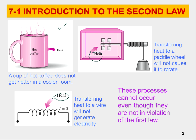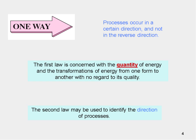These processes cannot occur, but they are not in violation of the first law — the law of conservation of energy. On paper, I could do calculations to transfer heat to a wire, get a cup of coffee hotter, or transfer heat to a paddle wheel and make it work, but it doesn't happen. Processes occur in a certain direction and not in the reverse direction. The first law talks about the quantity and transformations of energy, but does not talk about quality or direction. The second law will be used to identify the direction of processes.